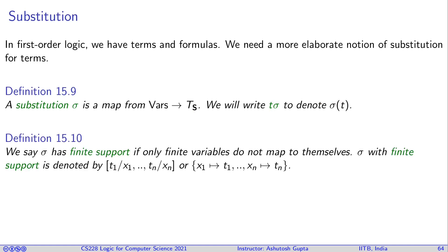If sigma has a finite support, i.e. there are only finitely many variables for which you are mapping and other variables you are not mapping, then you may write like this: t1/x1, tn/xn. Or you may use this notation x1 maps to t1, xn maps to tn. These are equivalent notations. In different literature, you will find this is used differently.